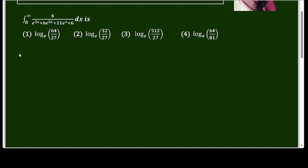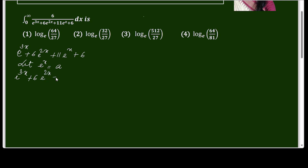Analyzing the denominator: e^(3x) + 6e^(2x) + 11e^x + 6 — we will convert this whole integral using partial fractions. Let e^x = a, then the denominator becomes a³ + 6a² + 11a + 6.